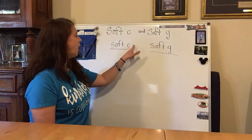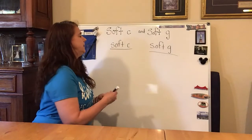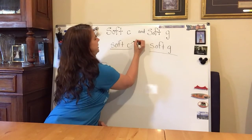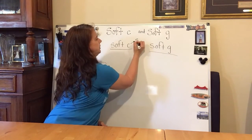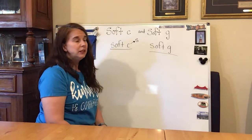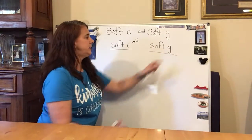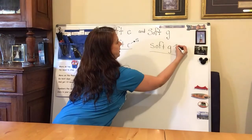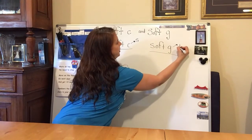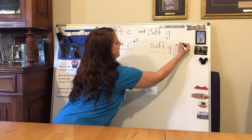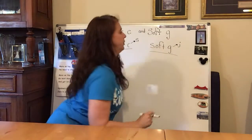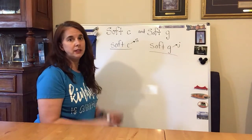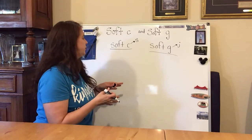So the soft C makes the S sound, like an S. And the soft G sound makes a sound like the letter J. So we're going to give some examples of that. Let's start with the soft C first.